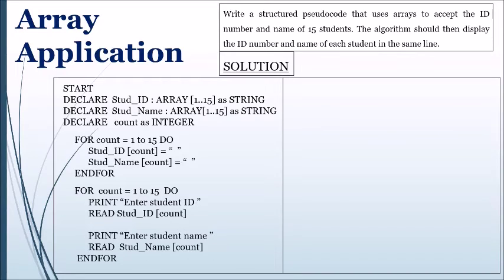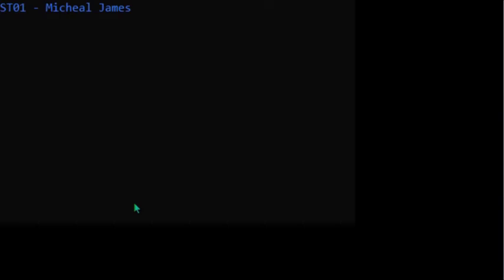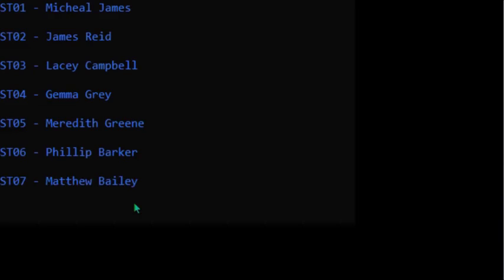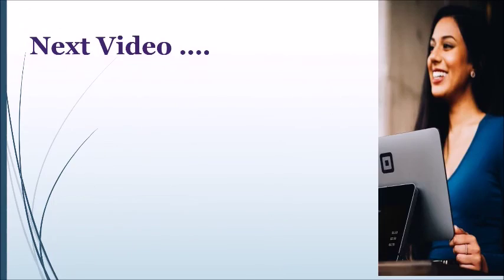A second for loop prompts and accepts entries of student ID and student name for all students. Each prompt statement gives a clear indication of the entry required, followed by input statements which store entries to the respective arrays. The utilization of multiple for loops is essential and is based on the structure of actions and array operations being performed. A third for loop displays the ID number and name of each student on the same line, using counter variable count as the index to ensure each student ID and name correspond to the initial entries made. The solution ends with the keyword 'stop'.